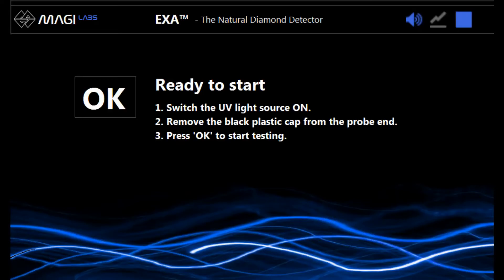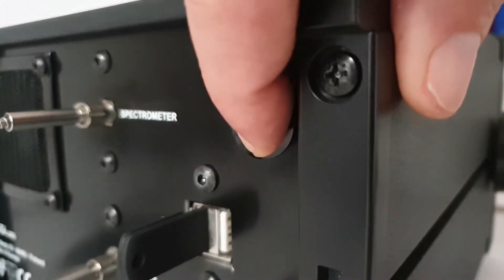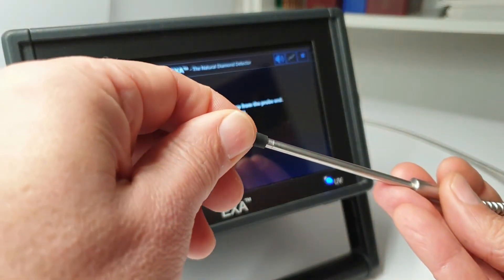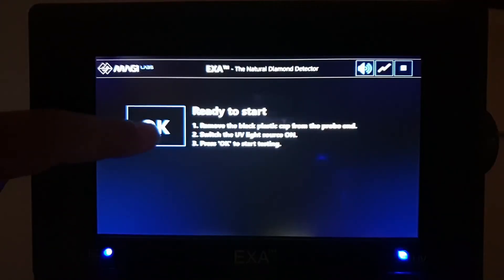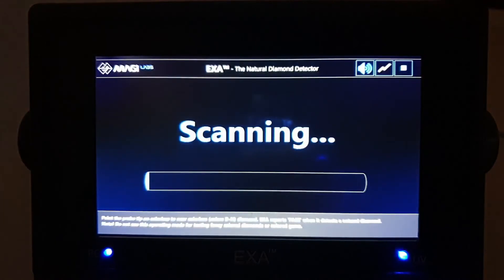Now switch the UV light on, remove the plastic cup from the probe end and press OK to start testing. The unit is ready to scan.